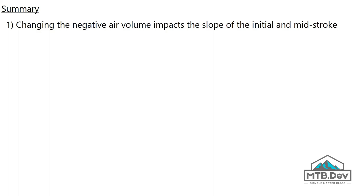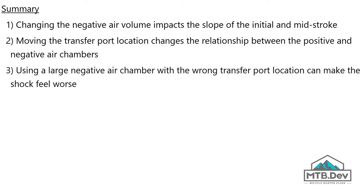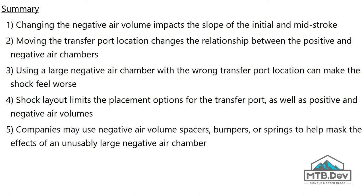In summary, we've learned that changing the negative air volume impacts the slope of the initial and mid-stroke. Moving the transfer port location changes the relationship between the positive and negative air chambers. Using a large negative air chamber with the wrong transfer port location can make the shock feel worse. Shock layout limits the placement options for the transfer port, as well as positive and negative air volumes. Companies may use negative air volume spacers, bumpers, or springs to help mask the effects of an unusably large negative air chamber.